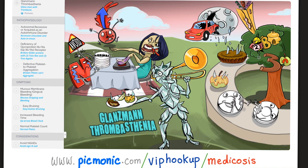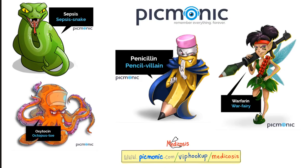Glanzmann's thrombasthenia on Picmonic: autosomal recessive, and can also be autoimmune. There is a problem with platelet aggregation — two plates hating each other. Mucous membrane bleeding and easy bruising are shown, with increased bleeding time and normal platelet count. Please avoid non-steroidals. On peripheral smear in Glanzmann's, you see no platelet clumping, because clumping is by definition an aggregation.